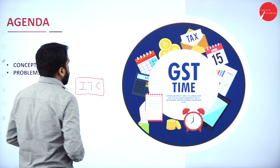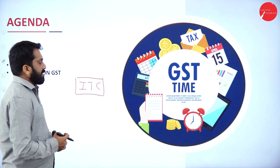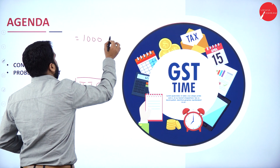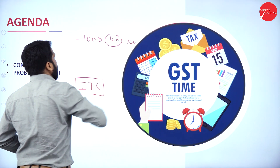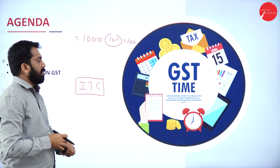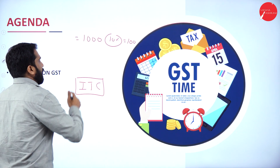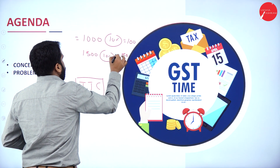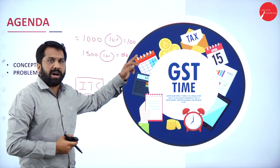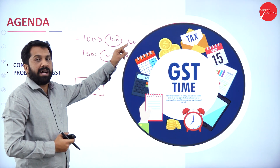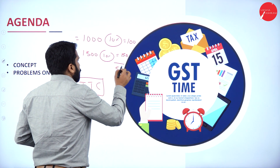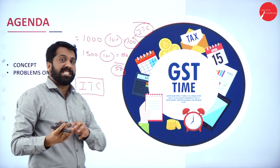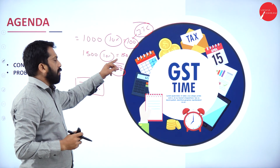What is input tax credit? For example, you have purchased something for 1,000. On that you have paid 10% tax, so you paid 100 rupees tax already. Now you are selling to somebody for 1,500. What is the tax on that? 150. Now, instead of paying 150 rupees tax, you have already paid 100 rupees tax. So you are supposed to pay tax of only 50. This we call it as ITC — input tax credit. Whatever tax paid earlier can be claimed for future taxes.